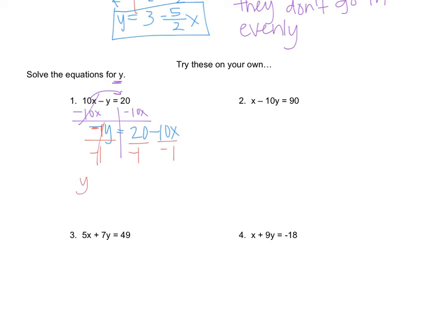So those cancel, and I get y equals 20 divided by negative 1 is negative 20. And now I can write minus negative 10, but I should write plus 10x. And I'll go over that right now. I have a minus, and then 10 divided by negative 1 is negative 10. So I would have minus negative 10x. But I want to make it simpler and write it as plus. So you should always do any sort of calculation. Make it look friendlier if you can. And so the answer is y equals negative 20 plus 10x.